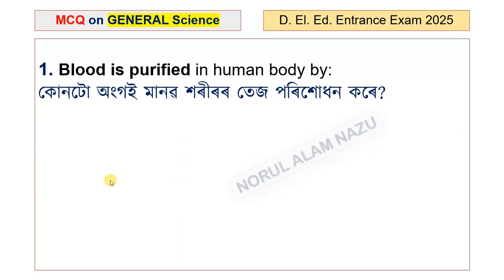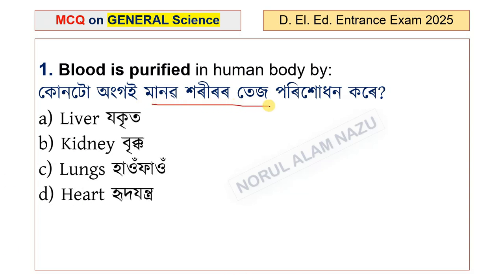Today I am going to talk to you about the 10th video. The first question is: blood is purified in the human body by — liver, kidney, lungs, and heart.